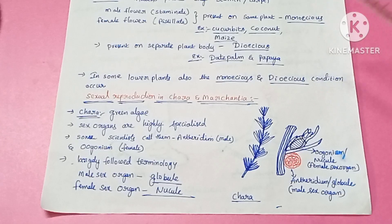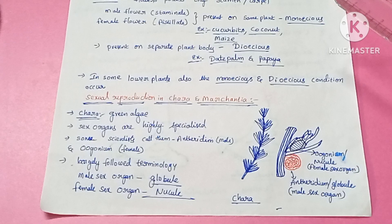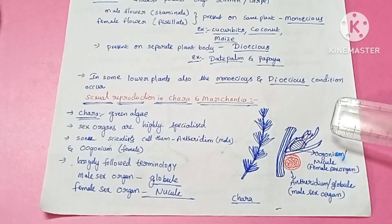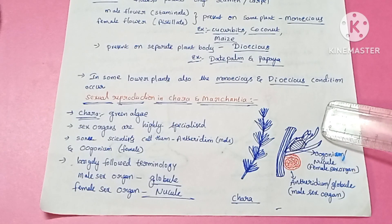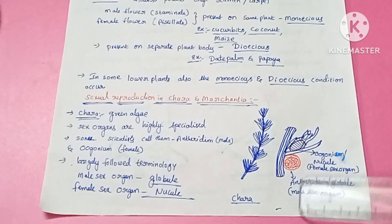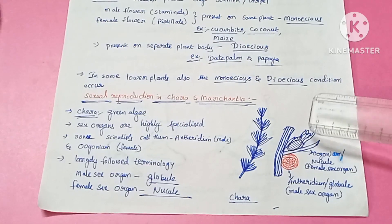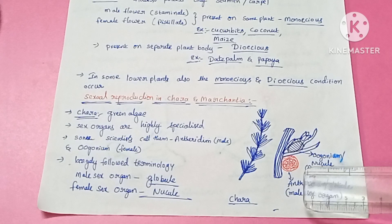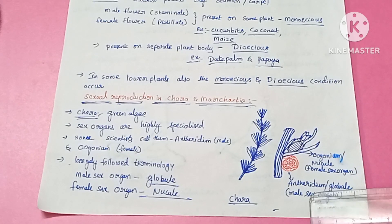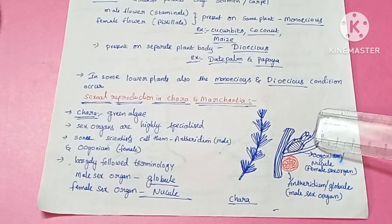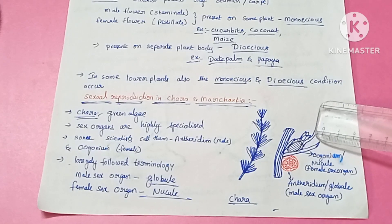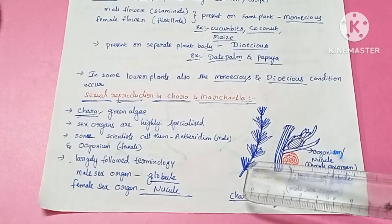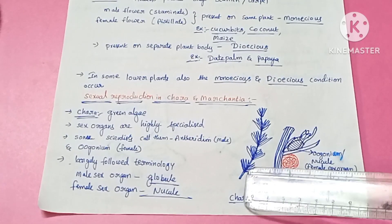In Chara, the sex organs are multi-celled and covered by jackets. The jacket of the nucule is formed by 5 tube cells, while the jacket of the globule is formed by 8 shield cells. The globule also has a cap of 5 coronary cells at the top.